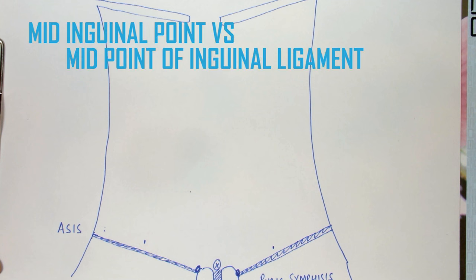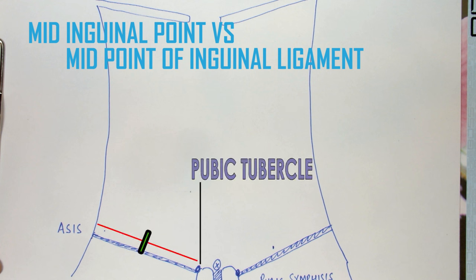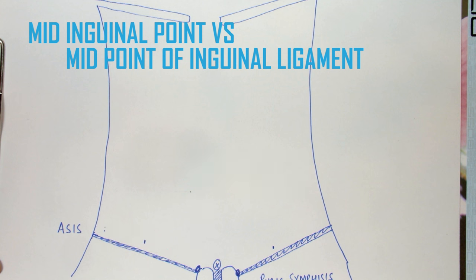One thing to mention here is the difference between the mid inguinal point versus the midpoint of the inguinal ligament. The distance between the anterior superior iliac spine and pubic tubercle is traversed by the inguinal ligament, and the middle of this ligament is known as the midpoint of the inguinal ligament. The midpoint of the distance between the anterior superior iliac spine and the pubic symphysis is known as the mid inguinal point, and this is one of the reference points for dividing the abdomen into various regions.